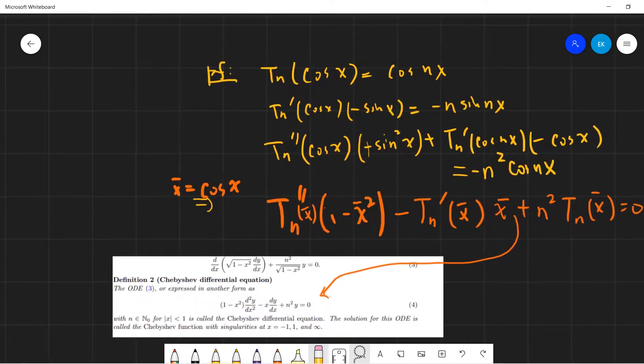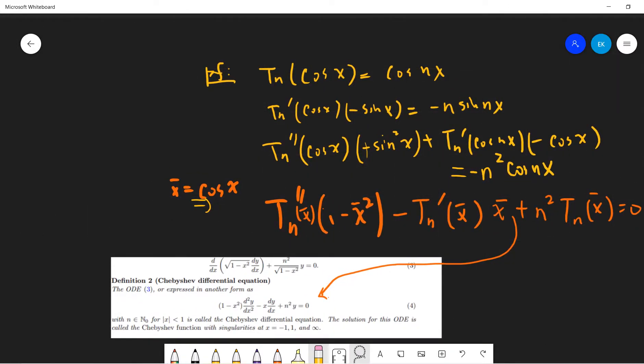So let's first see the differential equation. So remember at the previous video, the simple definition is Tn. You can view the Chebyshev polynomial as the metric polynomial. If somebody gives you cosine x, then it will give you cosine nx. So let's do a differentiation respect to x. So we've got Tn derivative cosine x. And the chain rule gives you minus sine x equals to minus n sine nx.